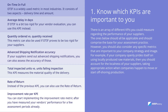Improvement rate per KPI: you can start implementing the improvement rate metric after you have measured your vendor's performance for a few assessment periods already. Just compare their KPI scores month by month to see how much they have improved or deteriorated. A supplier demonstrating consistent improvements with each assessment is a good indicator of them being a valuable partner.